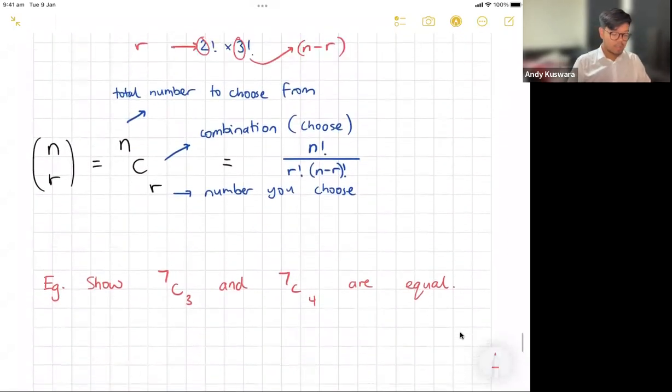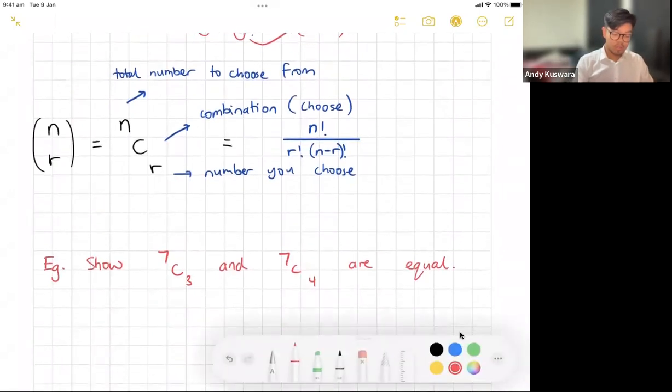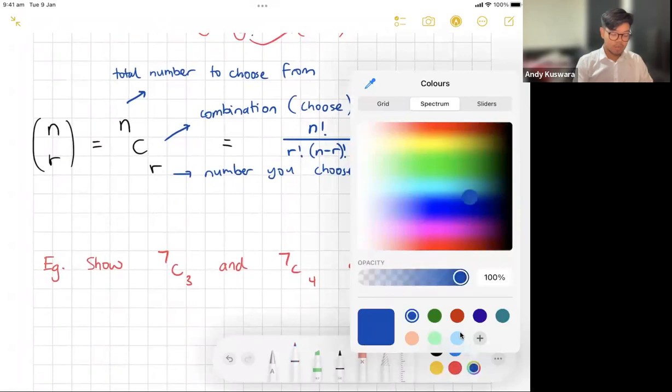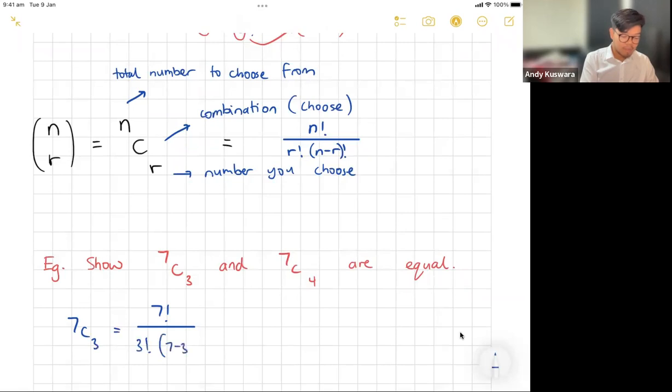First question here: Show that 7C3 and 7C4, or 7 choose 3 and 7 choose 4, show that they are equal. We could put it in our calculator—it's in your calculator right next to the permutations P button. But the way that we'd show it is we'd put it into this form: 7 choose 3 equals 7 factorial over 3 factorial times (7 minus 3) factorial.